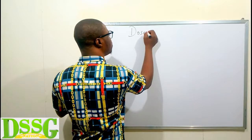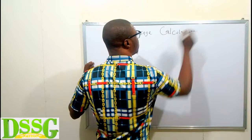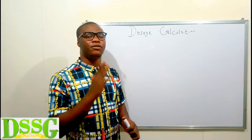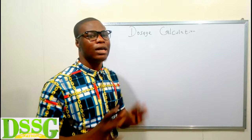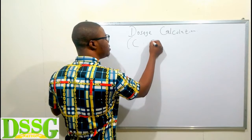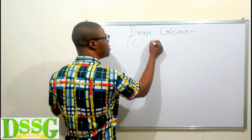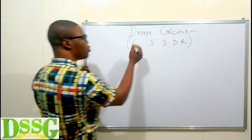We are going to be talking about dosage calculation. Calculation is not difficult. The first thing you have to put into consciousness is that we have five types of dosage calculation — you can calculate dosage based on five things. To remember them, use this acronym: C, S, S, D, R — together that is CSSDR, one, two, three, four, five.